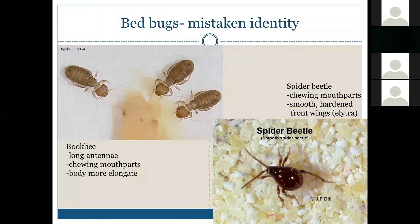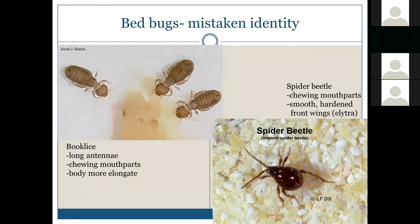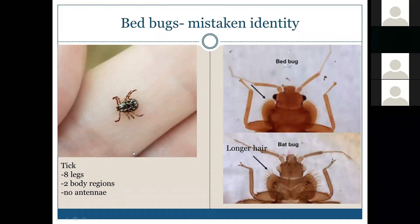Ticks can be told apart from bed bugs by counting legs — the first stage of some ticks may only have six legs, but all other stages have eight legs. Ticks have no antennae and only two body regions instead of three. These are arachnids, whereas bed bugs are insects, so you can distinguish them by eight legs, two body regions, and no antennae.